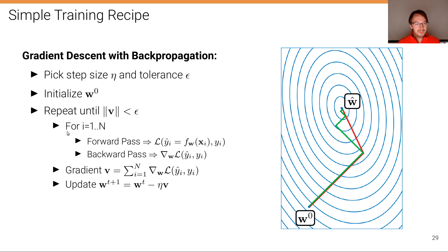What we repeat is these following three steps. In the first step, for each data point, we calculate the forward pass and the backward pass to compute the gradients of the loss function with respect to the parameters w. In the second step, we calculate the overall gradient by summing up all the individual gradients of the individual data points. And finally, we take one step into the negative gradient direction, a step with step size eta. This is the algorithm for gradient descent on computation graphs.